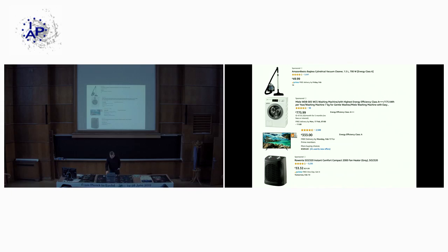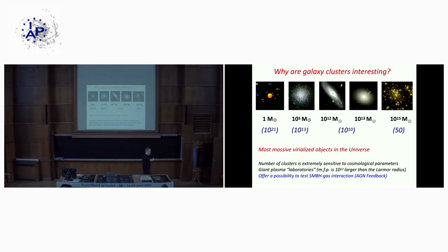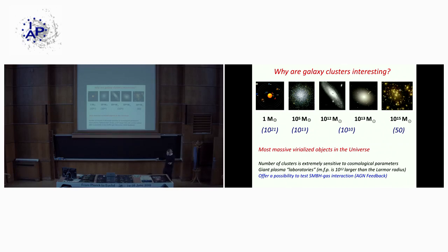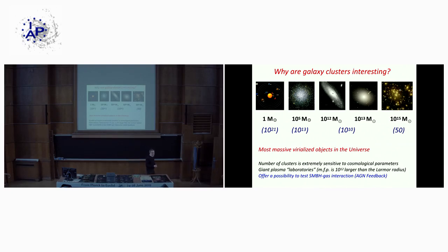As a short introduction to clusters: in our universe there are many gravitationally-bound systems which are quasi-stationary. On the left is the solar system — quasi-stationary with mass of order one solar mass. There are globular clusters at around 10^5 solar masses, still in quasi-equilibrium. Then there are spiral and elliptical galaxies, and finally very massive clusters. The most massive clusters at 10^15 solar masses number only about 50 such large objects in the observable universe. Clusters are the most massive localized objects in our universe.